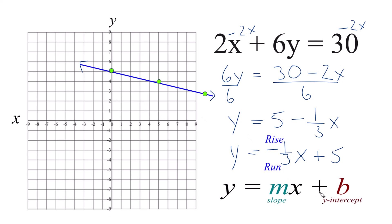This is Dr. B using slope-intercept form here to graph the equation 2x plus 6y equals 30. If we used a table of values, you'd get the same general line here. Thanks for watchin'.